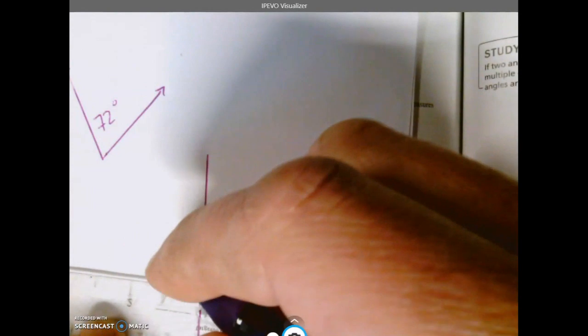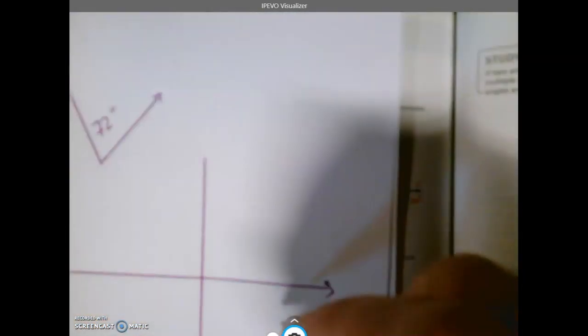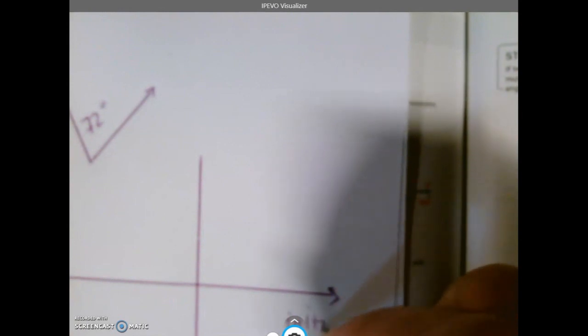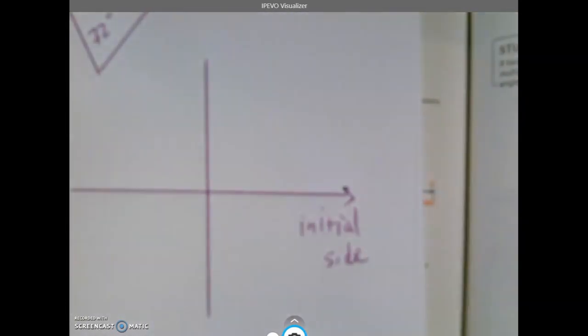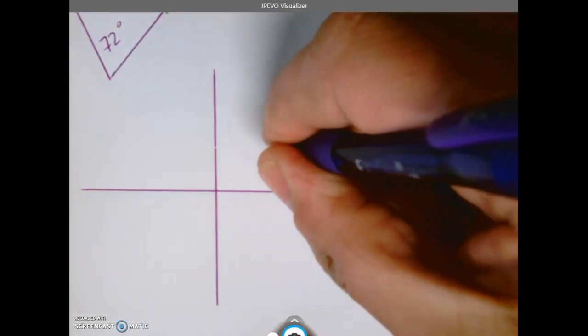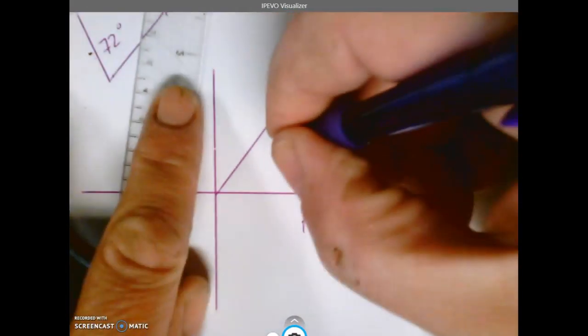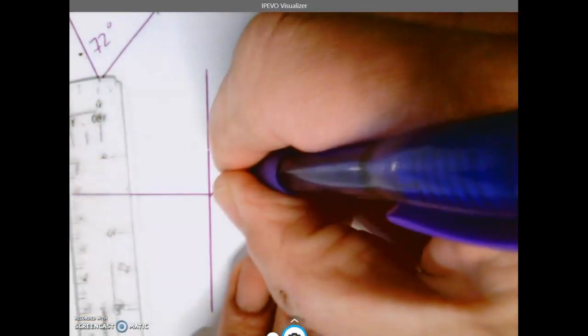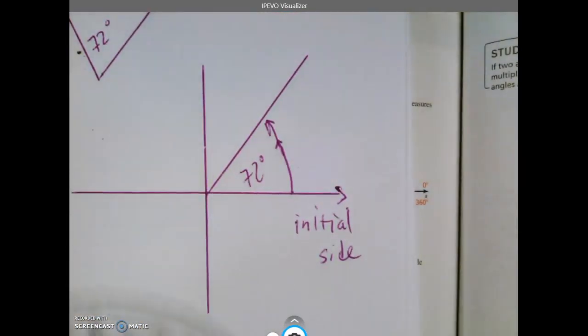To make things a little easier, they said when we graph things we're in agreement that the x-axis goes positive. So this is what we call the initial side. And if it said rotate 72 degrees, you would rotate this direction up to about 72 degrees. We'll just estimate it, about 72 degrees right there.